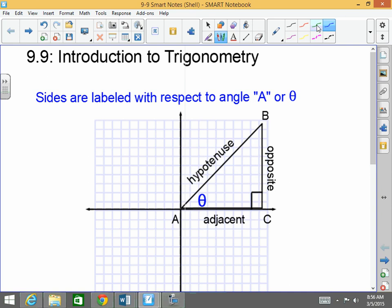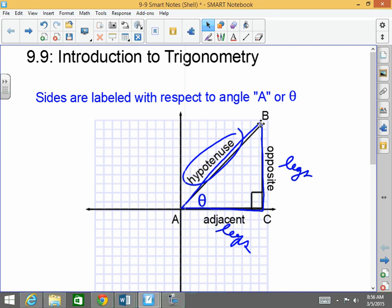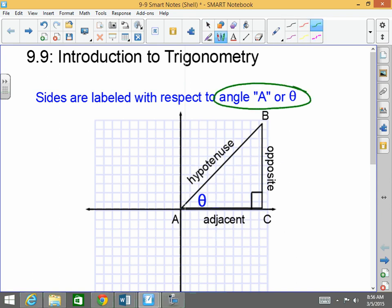First of all, we're talking about trigonometry. We're really going to focus on what's called right triangle trigonometry. And we already know that a right triangle consists of two legs and a hypotenuse. We're going to tweak this a little bit. When we're talking about the sides of a right triangle with respect to trigonometry, we're going to be talking about sides with respect to an angle. In this case, we're talking about angle A or theta. This symbol is called theta, a Greek letter, very popular and commonly used in trigonometry. It just represents an angle.